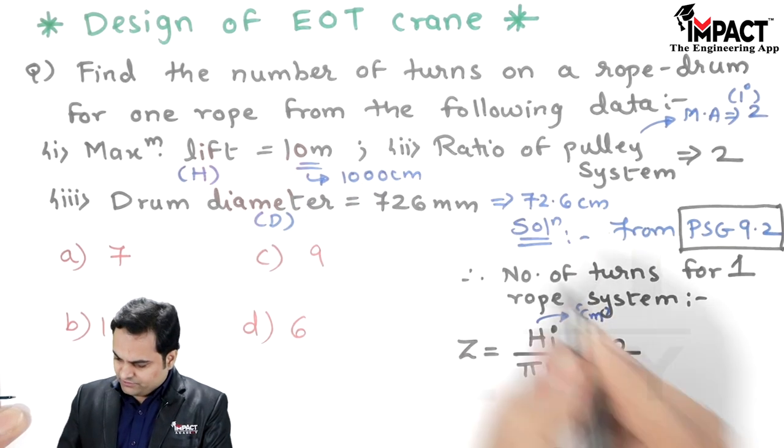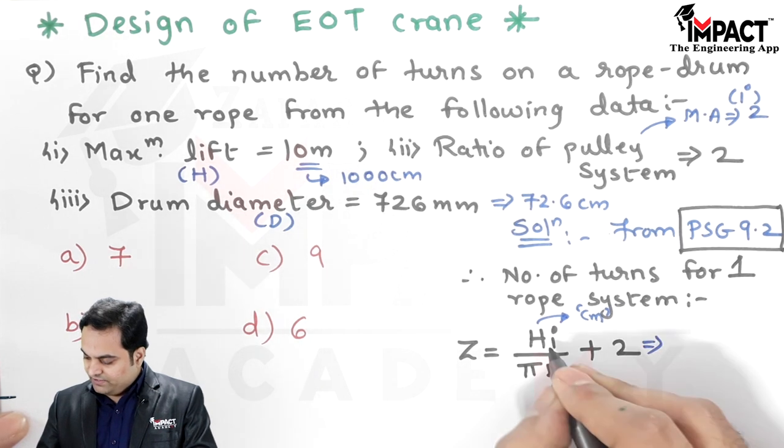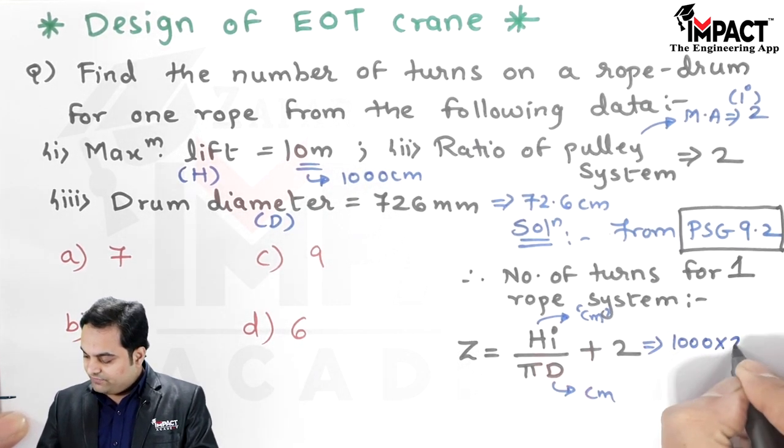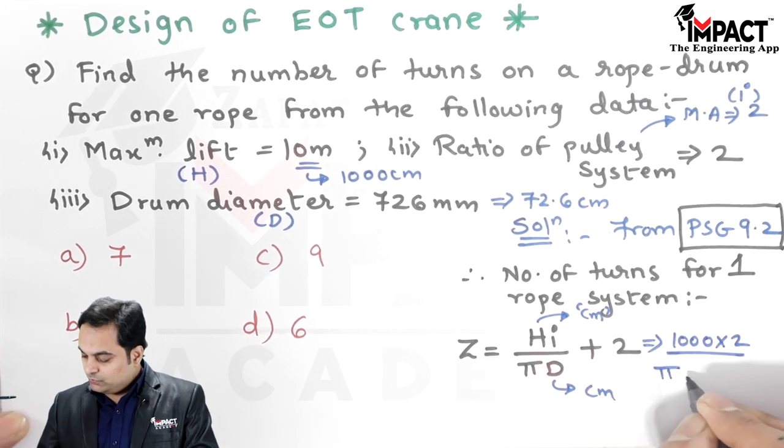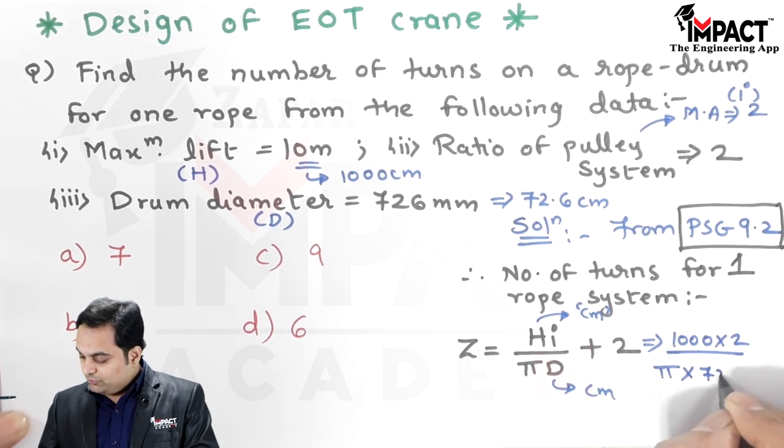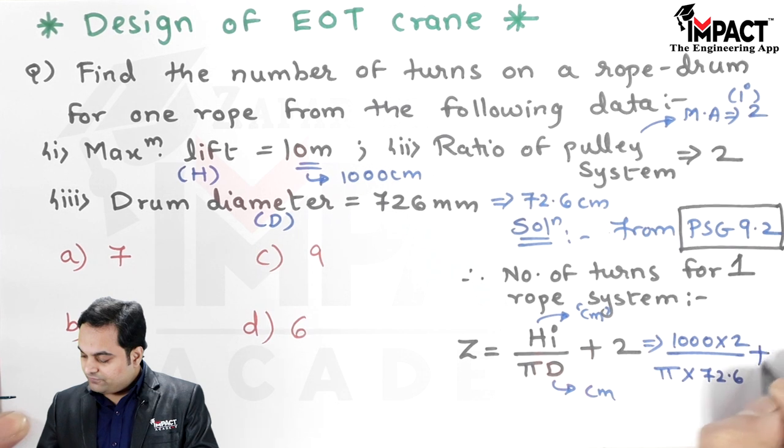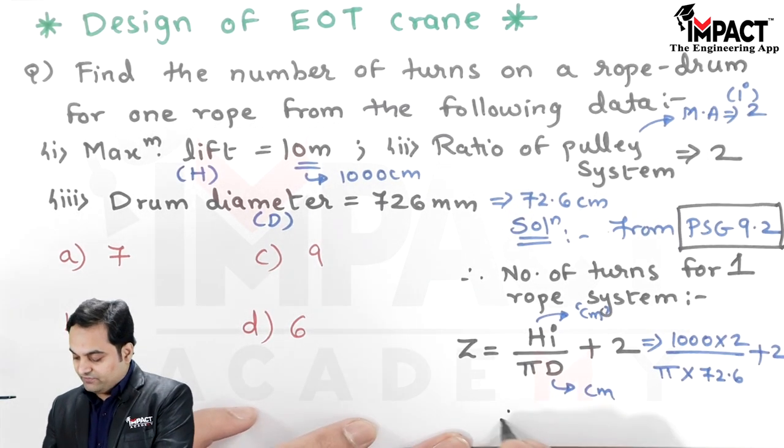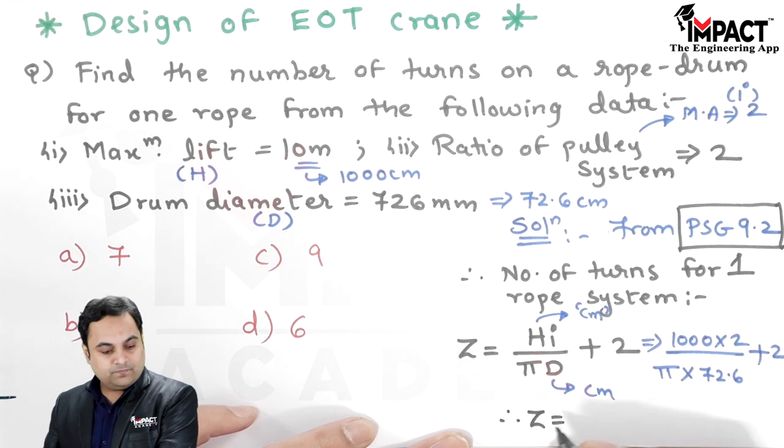So here I will be putting the values: Hi is 1000, H is 1000, i is 2, pi into 72.6 plus 2. Therefore Z value comes out to be the answer which I have, it is 10.76.